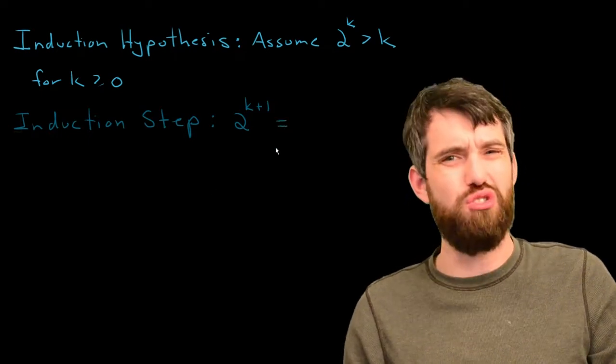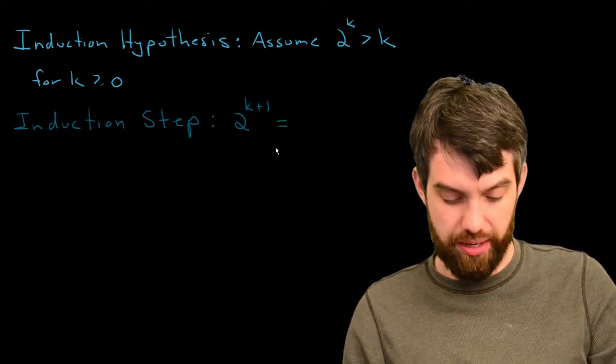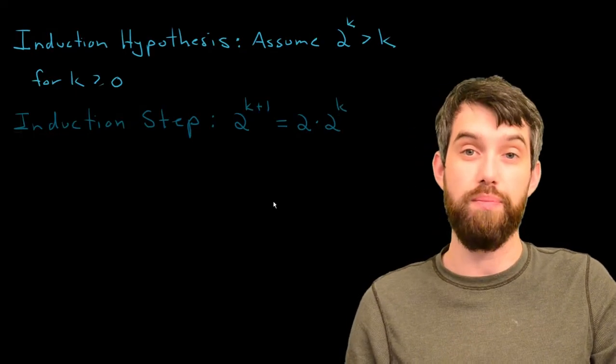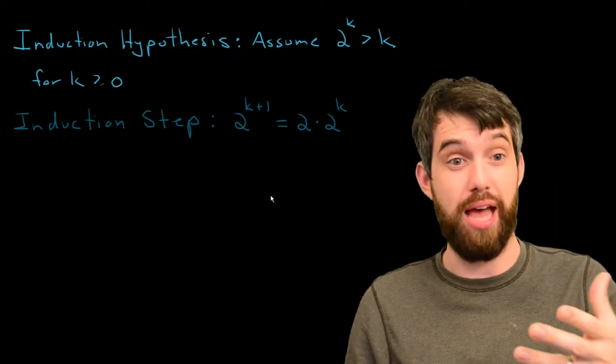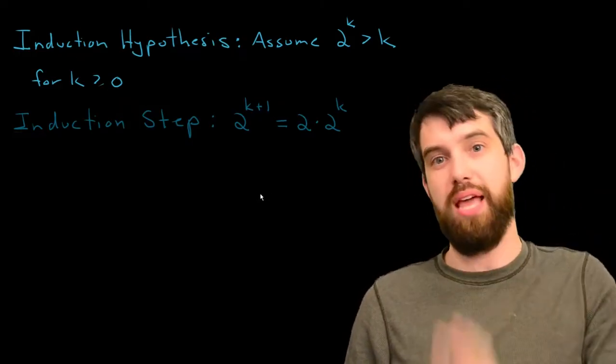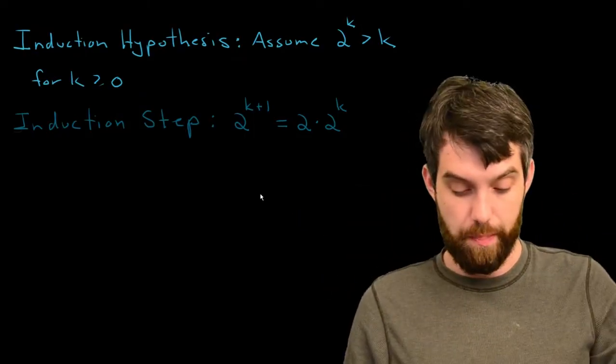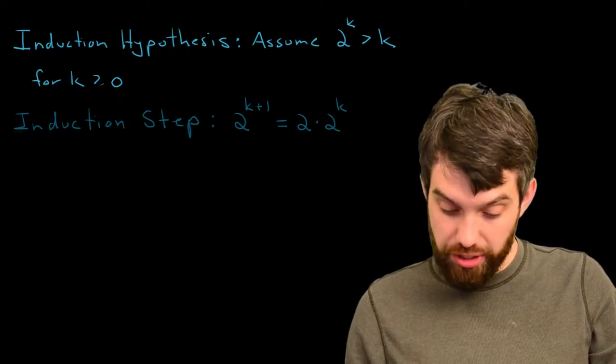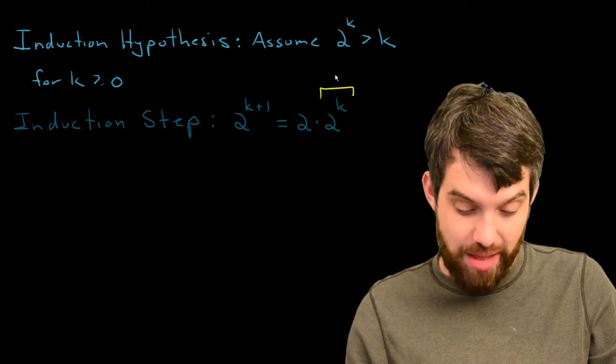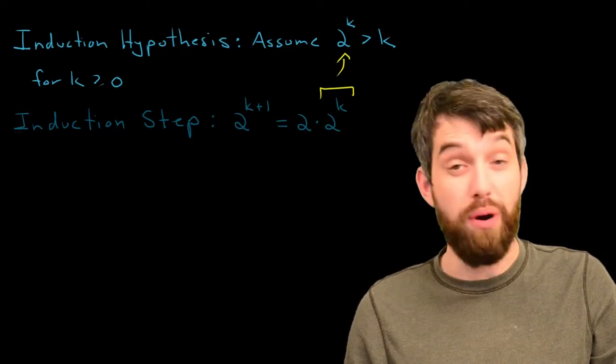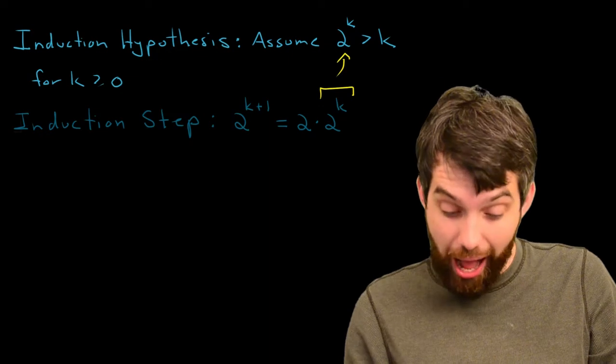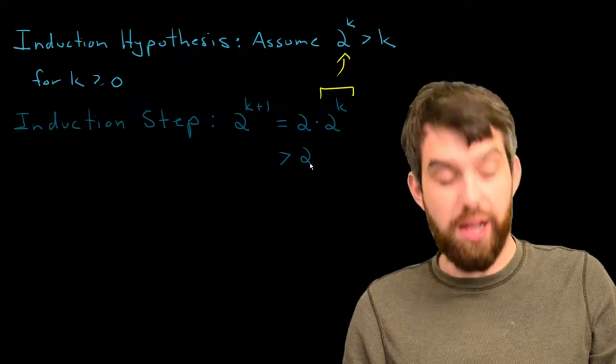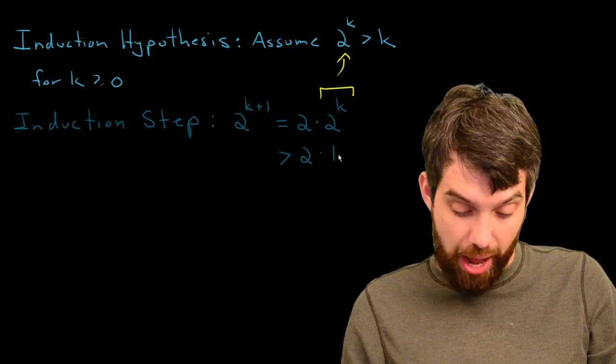The first sort of algebraic trick that sticks out to me here is that this can be thought of as 2 multiplied by 2 to the power just of k. Indeed, this is one of our exponential rules that a to the b times a to the c is a to the b plus c. Now, part of the reason why I did this is that what I'm really interested in is identifying this 2 to the power of k because I know something about 2 to the power of k. That's something that we can use our assumption. So I can say 2 to the k is greater than k, so this is going to be greater than - the first 2 comes along for the ride, and then it's multiplied by k.